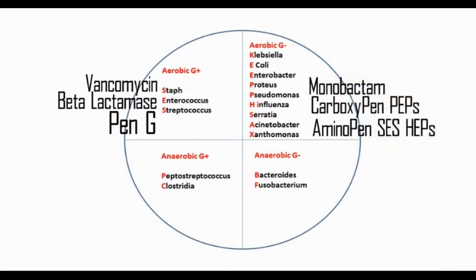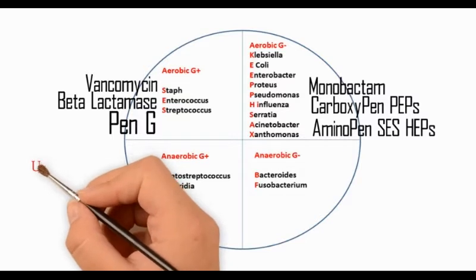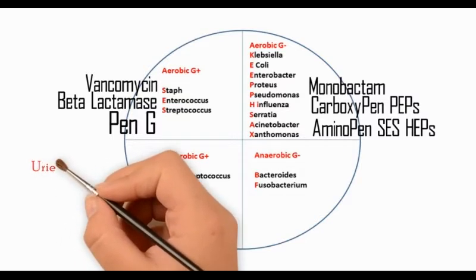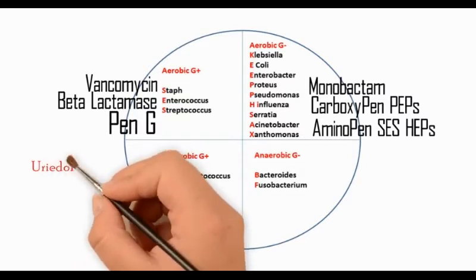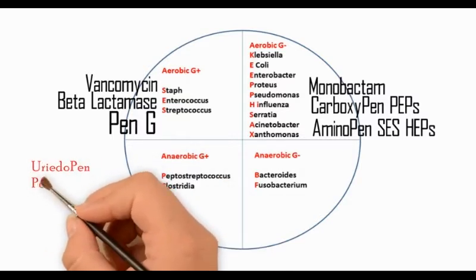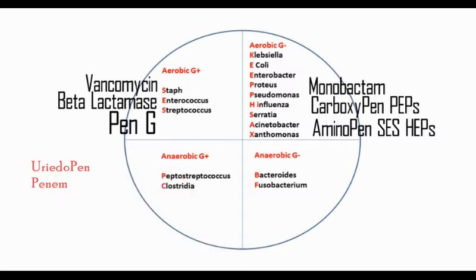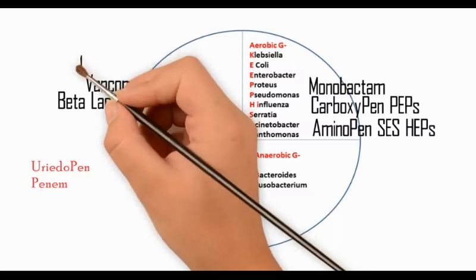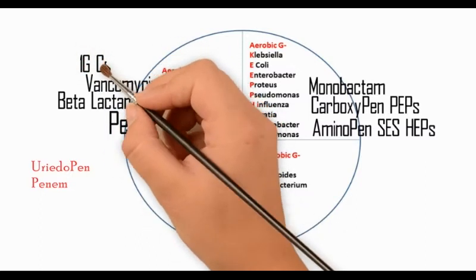The monobactam antibiotics work against gram-negative organisms. Ureidopenicillins such as piperacillin and ticarcillin, the penems such as meropenem, carbapenem, and imipenem have the broadest spectrum of activity, covering all these organisms.